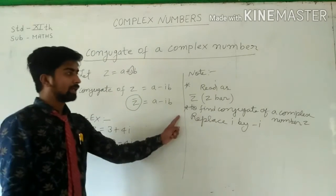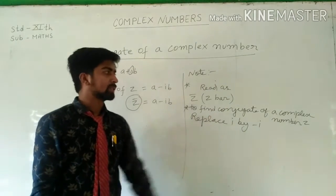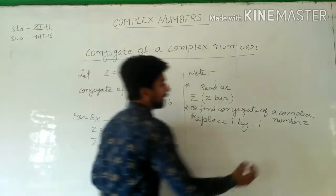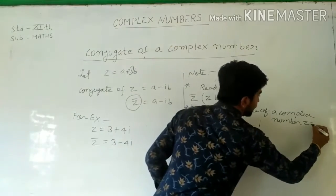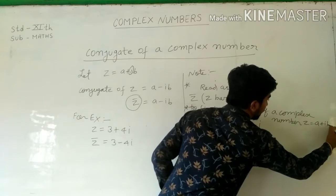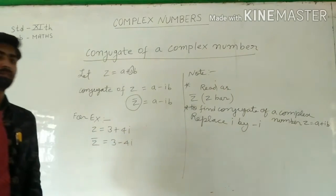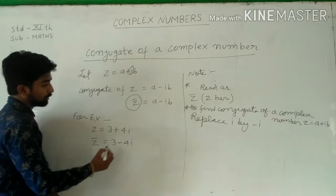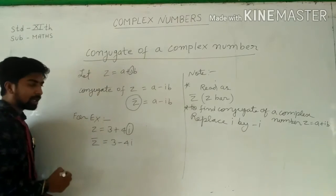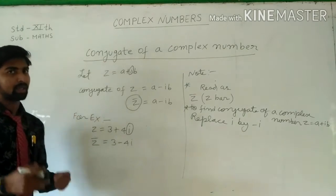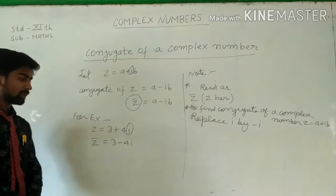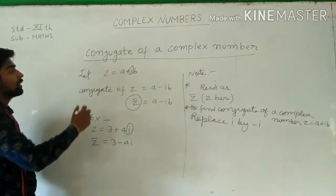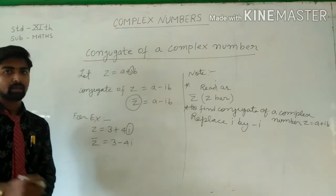To find the conjugate of a complex number z, replace i by minus i. And z is a plus ib. If you replace i by minus i, then you will easily be able to get the conjugate of a complex number.